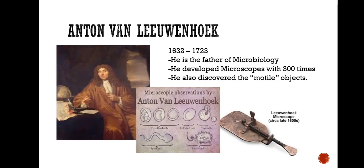Anton van Leeuwenhoek is the father of microbiology. He discovered the microscope with 300 times magnification and also discovered tiny motile objects, noting that motility is the quality of life and these specimens are living organisms. He made the first observations of human red blood cells and sperm cells.